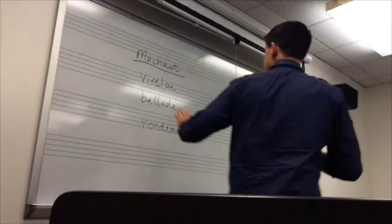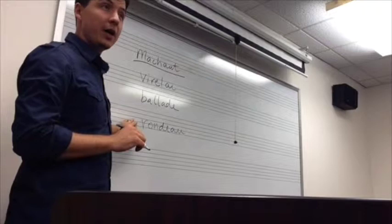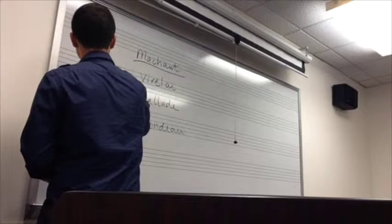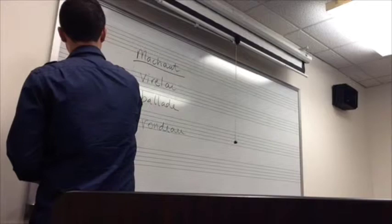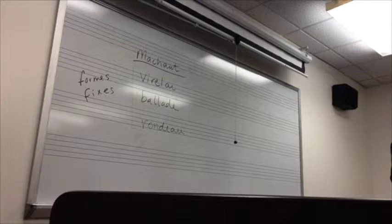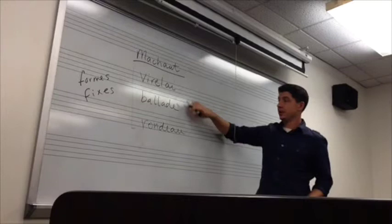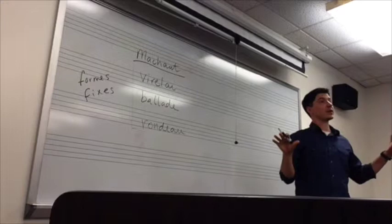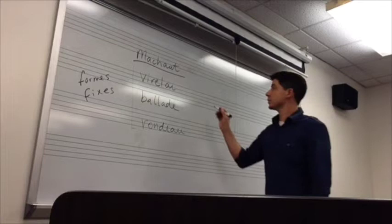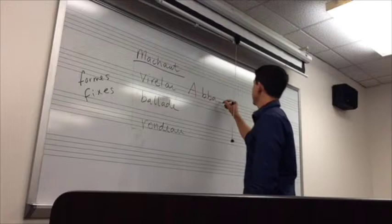When we talk about these forms — the virelai, the ballade, and the rondeau — we are talking about the formes fixes, which in French simply means 'fixed forms.' If you were writing a virelai you didn't have to choose the form — it was preset. The virelai begins like this: A B B A A. If it's a capital letter, both the text and music are repeated; if lowercase, only the melody is the same, not the text.